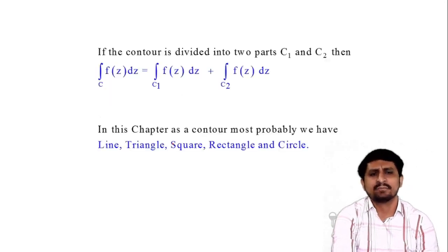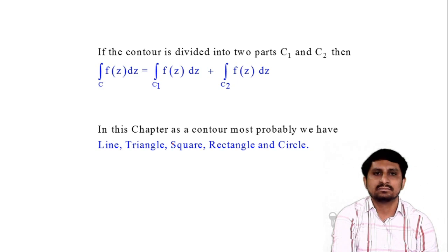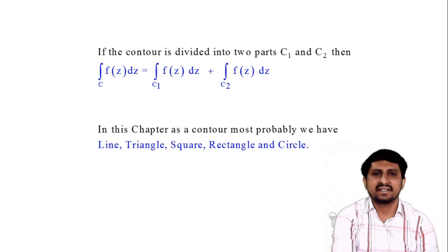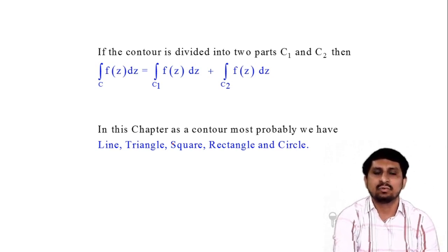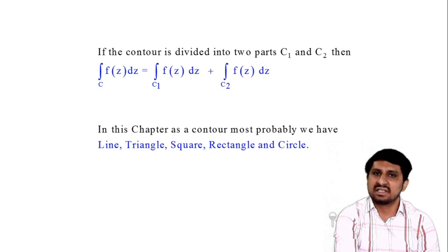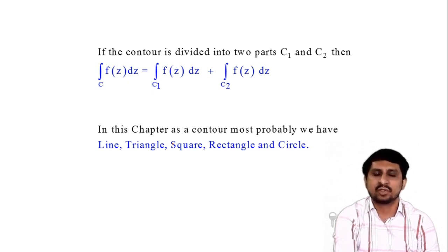As a contour, we know that in your case we have a line, square, rectangle, or circle as types of figures for line integral. Also, if your contour is divided into two parts c1 and c2, then we know that the integration of f(z) dz over contour c can be expressed as integration of f(z) dz over c1 plus integration of f(z) dz over c2.